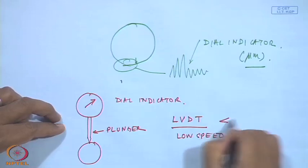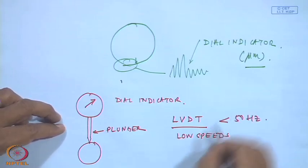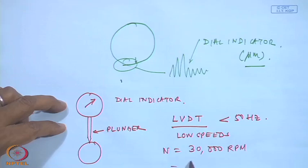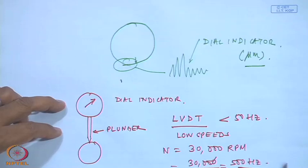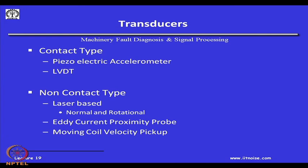For a gas turbine running at about 30,000 RPM, that is 500 Hz as the fundamental frequency. Such high-speed measurements are not possible through mechanical devices like an LVDT or dial indicator. We need to look at what instruments or transducers are available to measure high-frequency vibrations. Let me give a general overview of the different types of vibration transducers available.